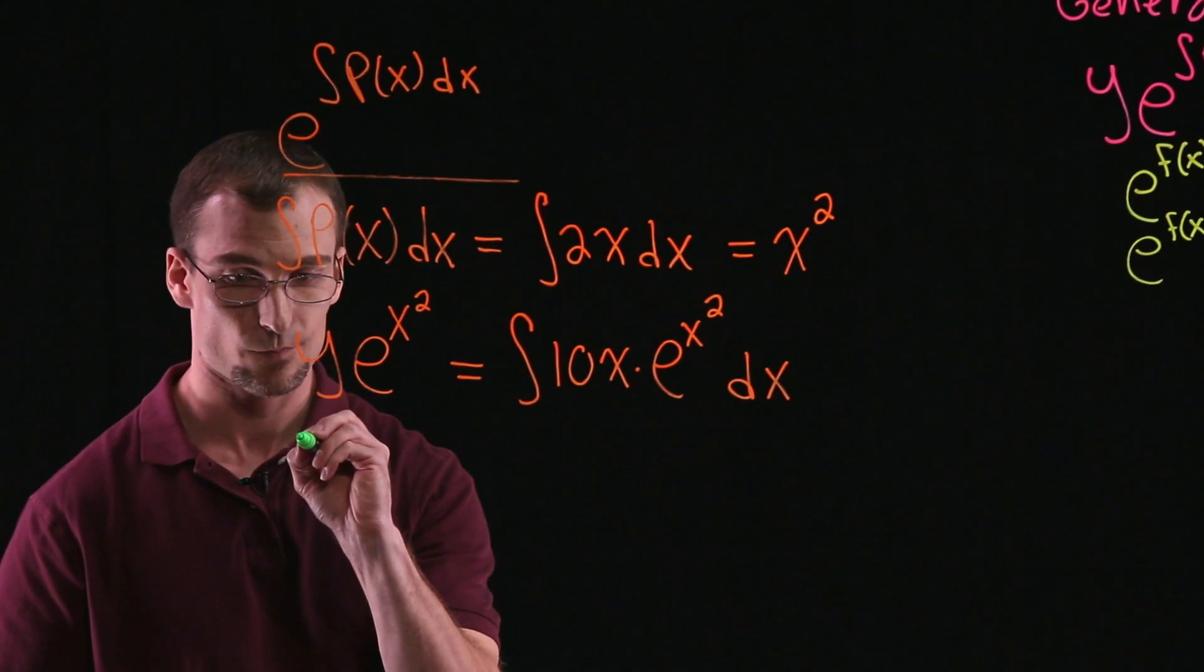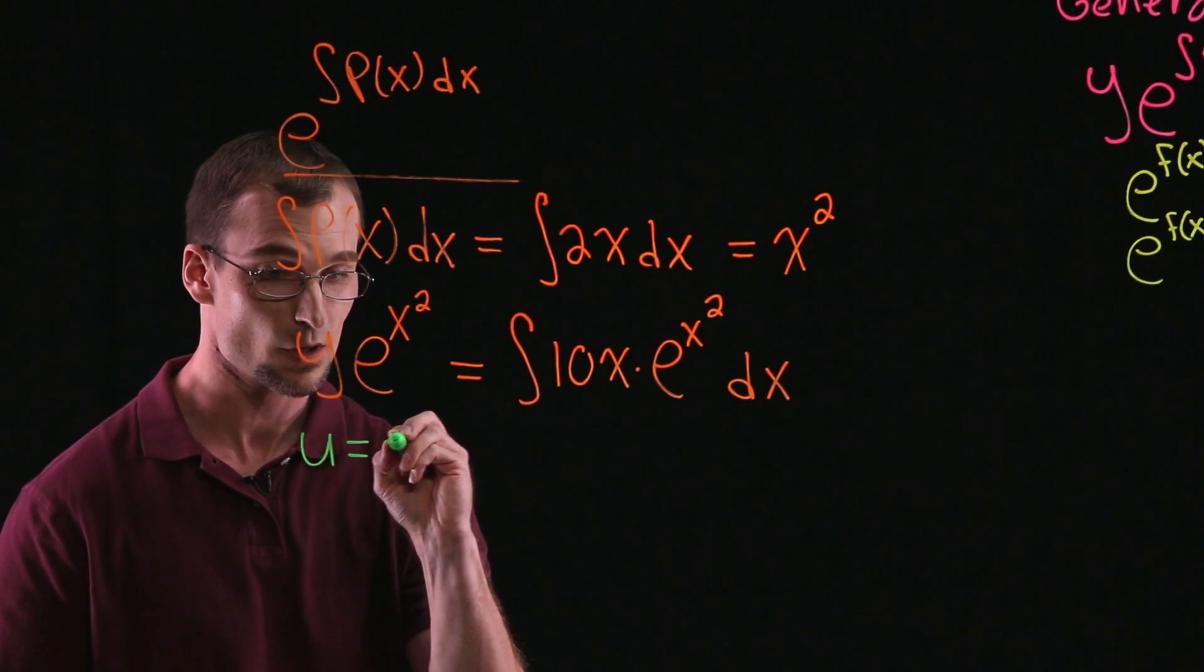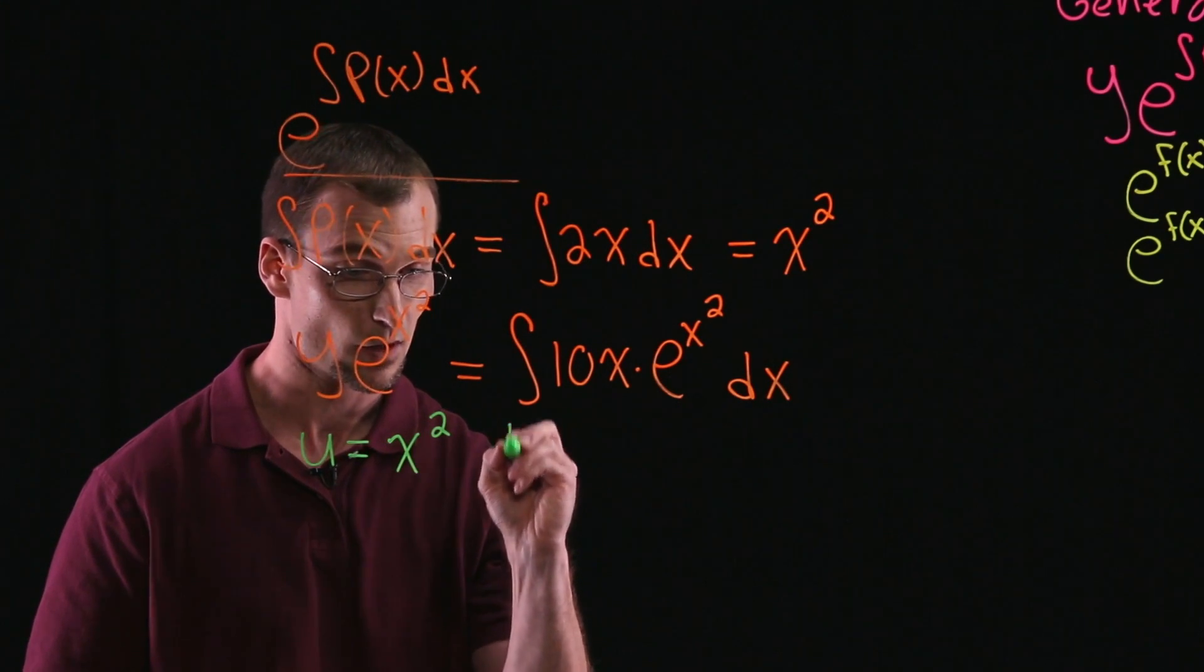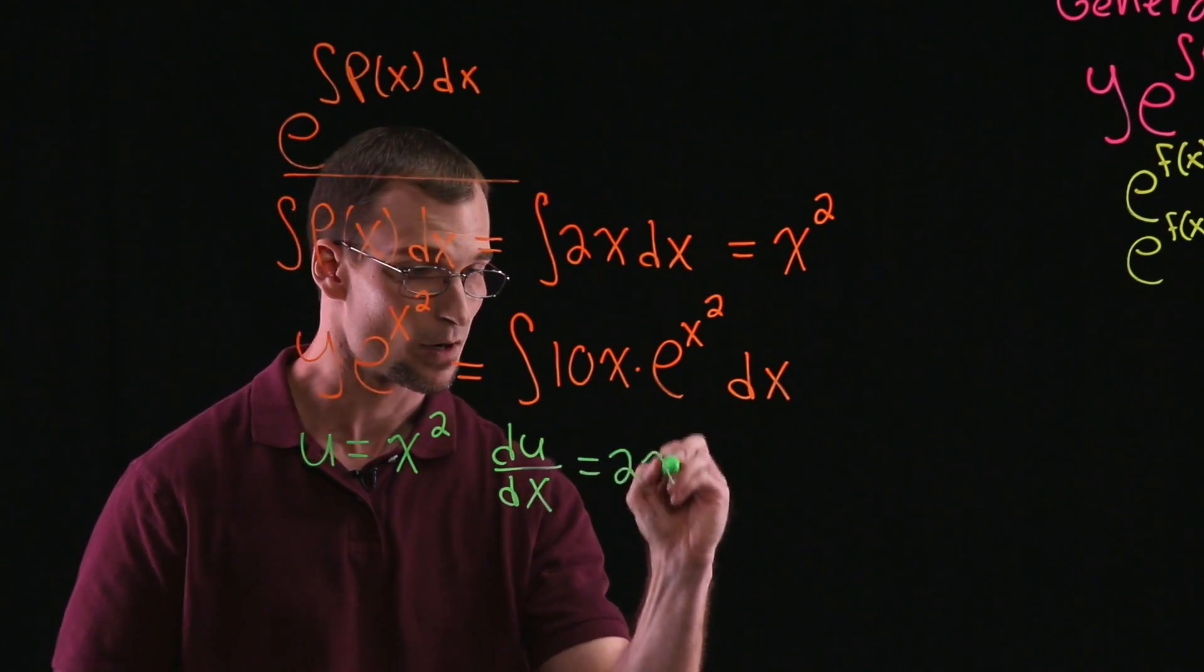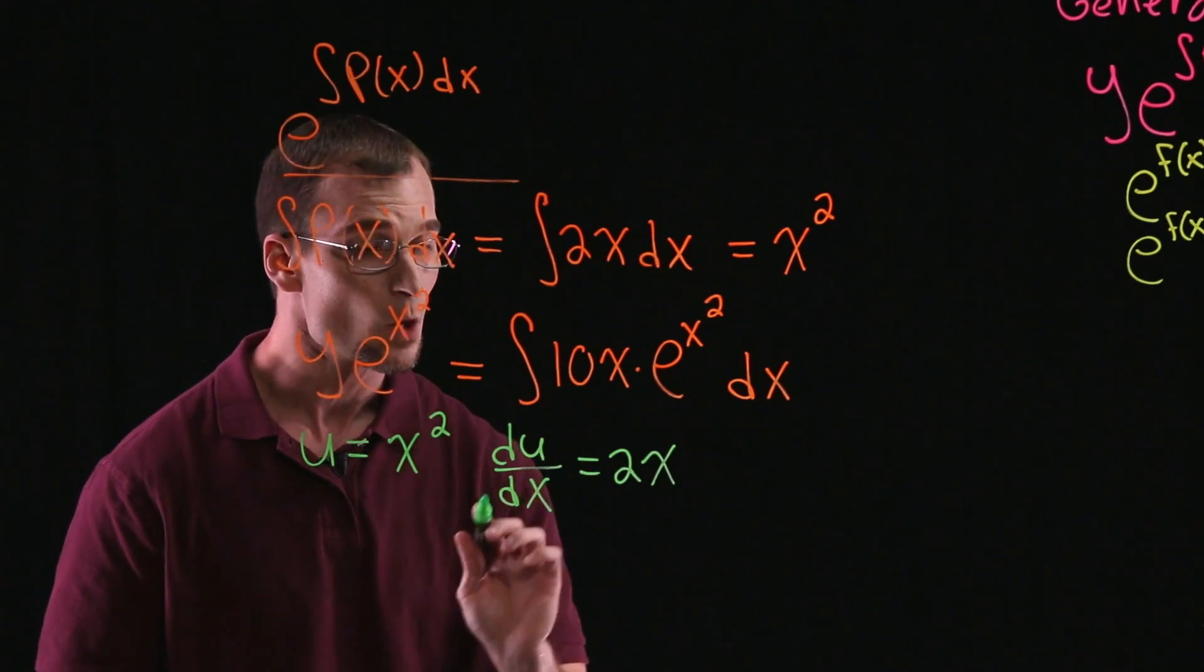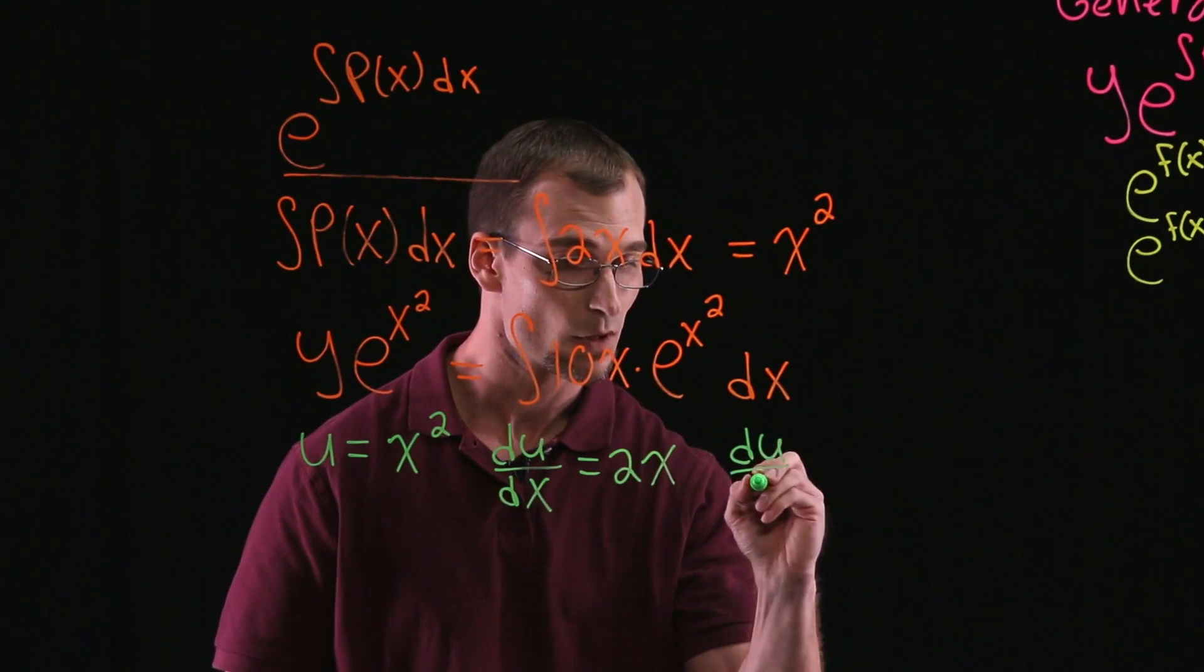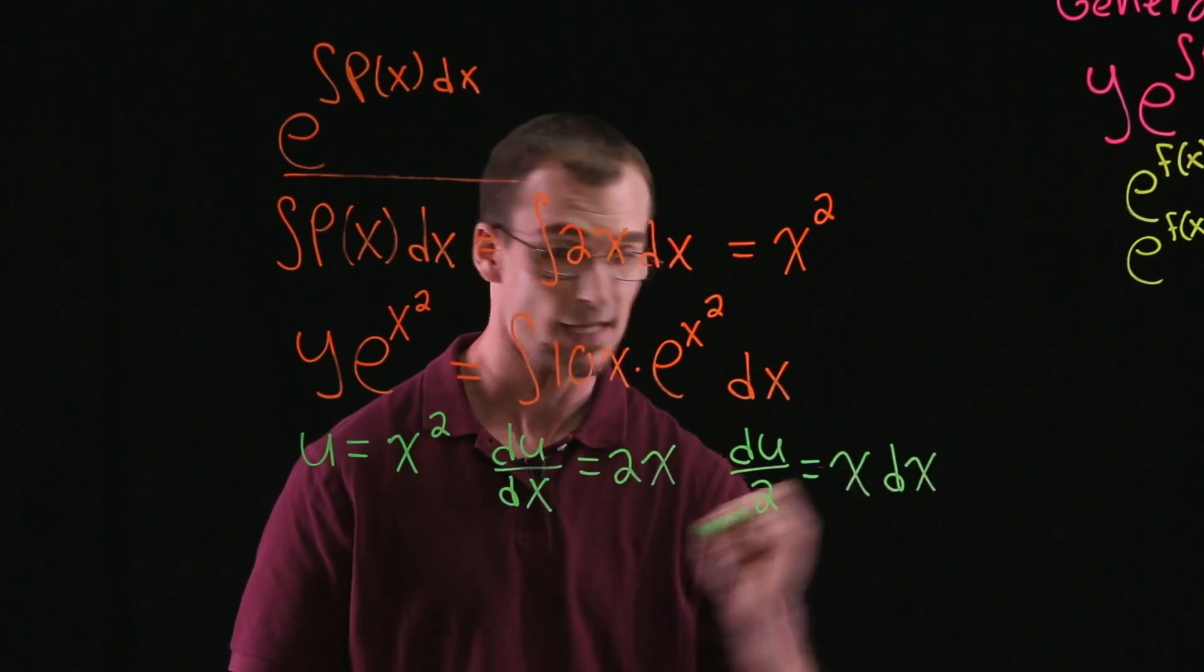So we'll start computing the integral on our right-hand side. We'll let u be equal to x squared. So we take the derivative with respect to x of both sides. So we get du/dx is equal to 2x. And, of course, we can simplify this a couple of different ways. What I'm going to do is bring all of the x terms to one side and constants to the other.